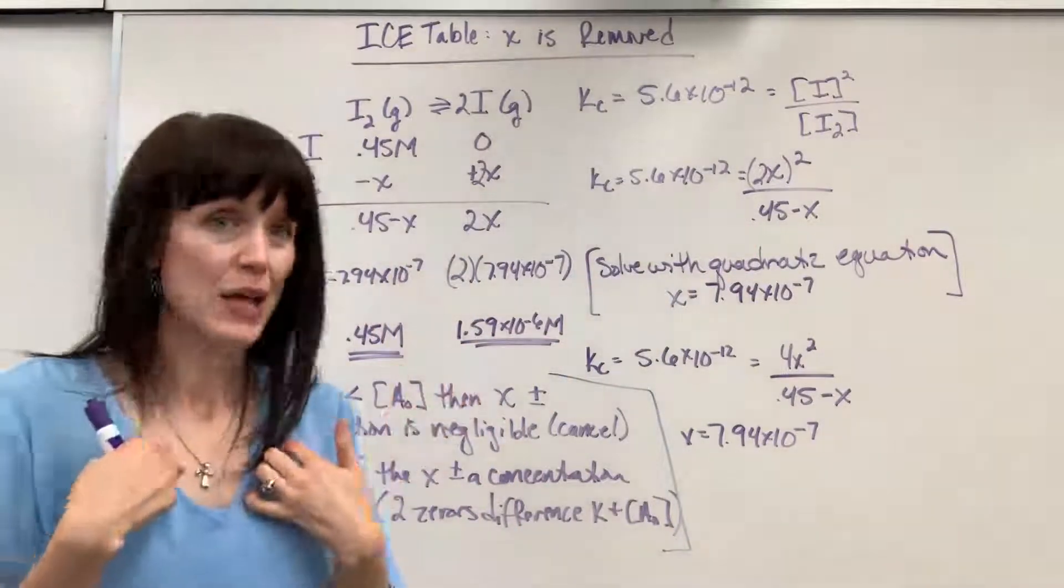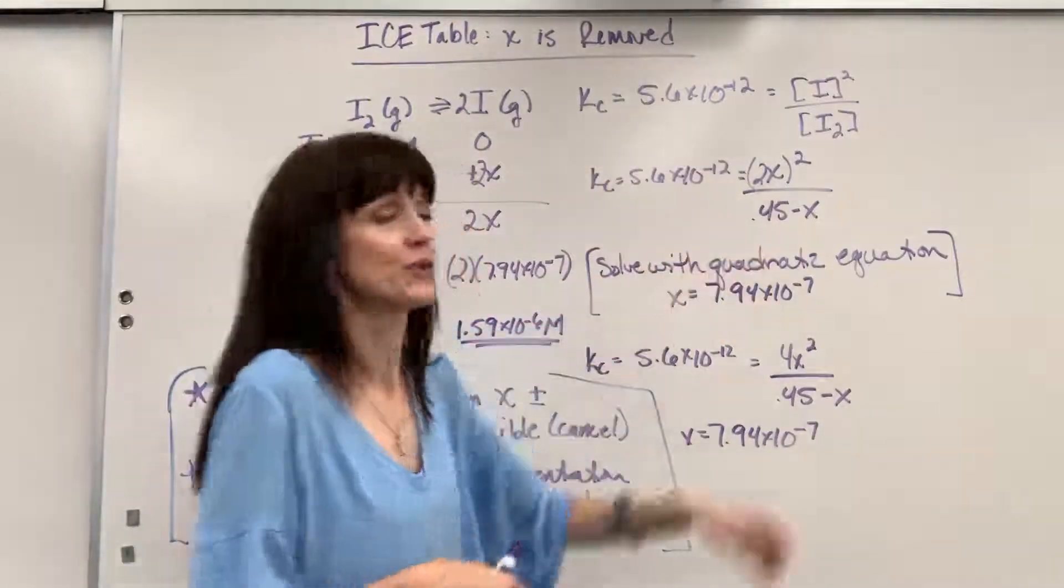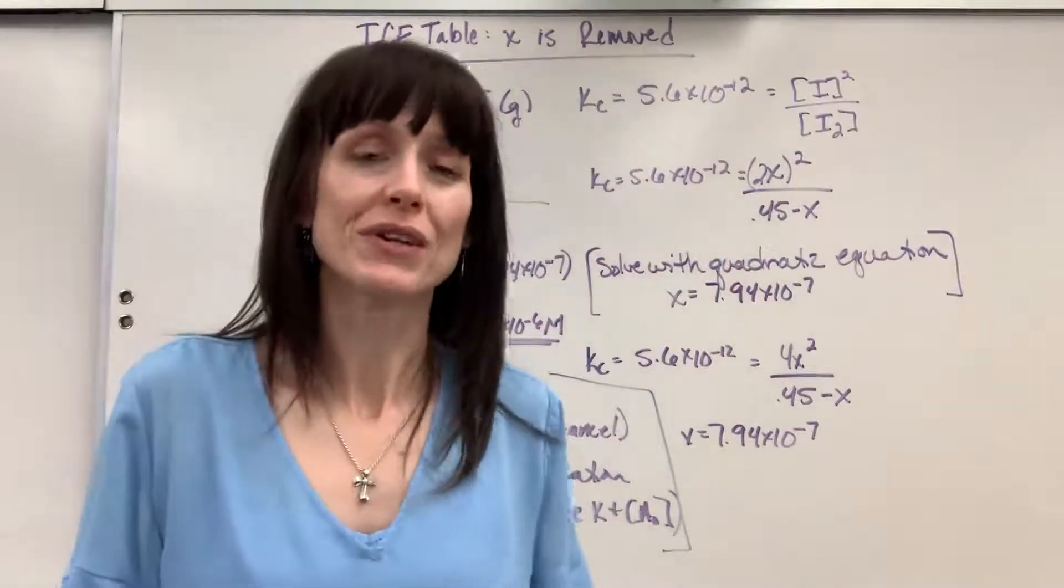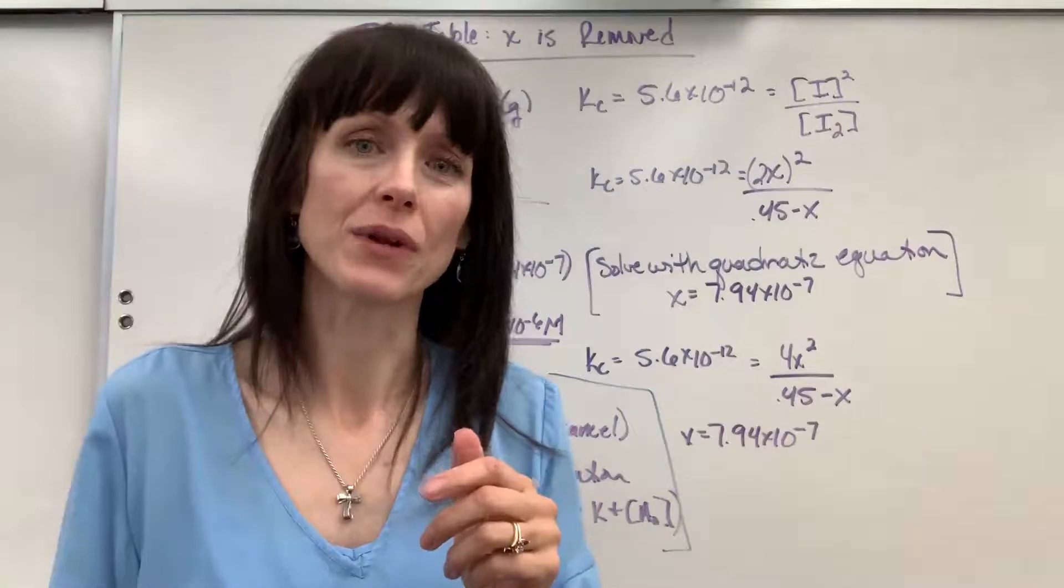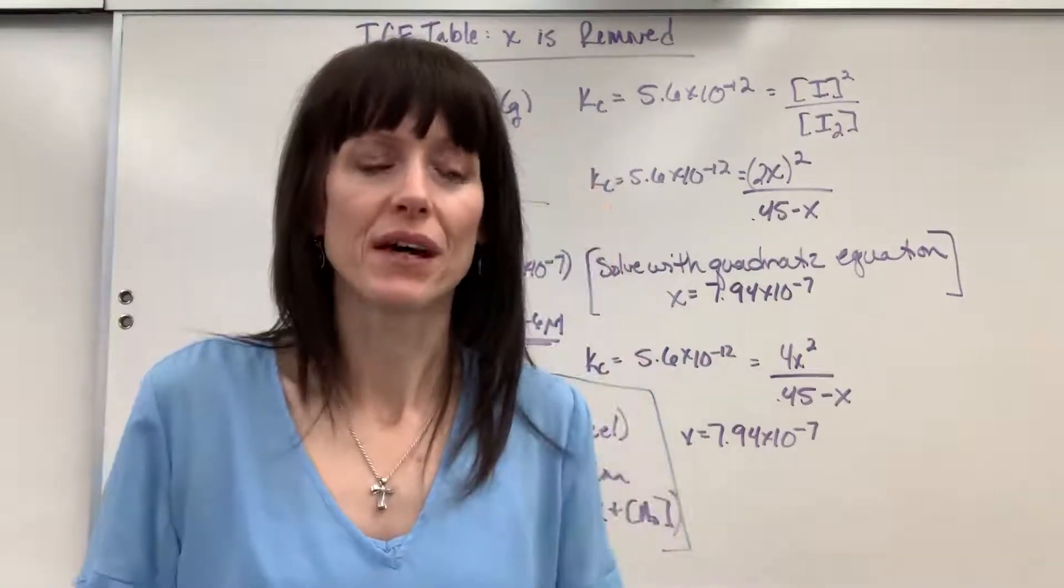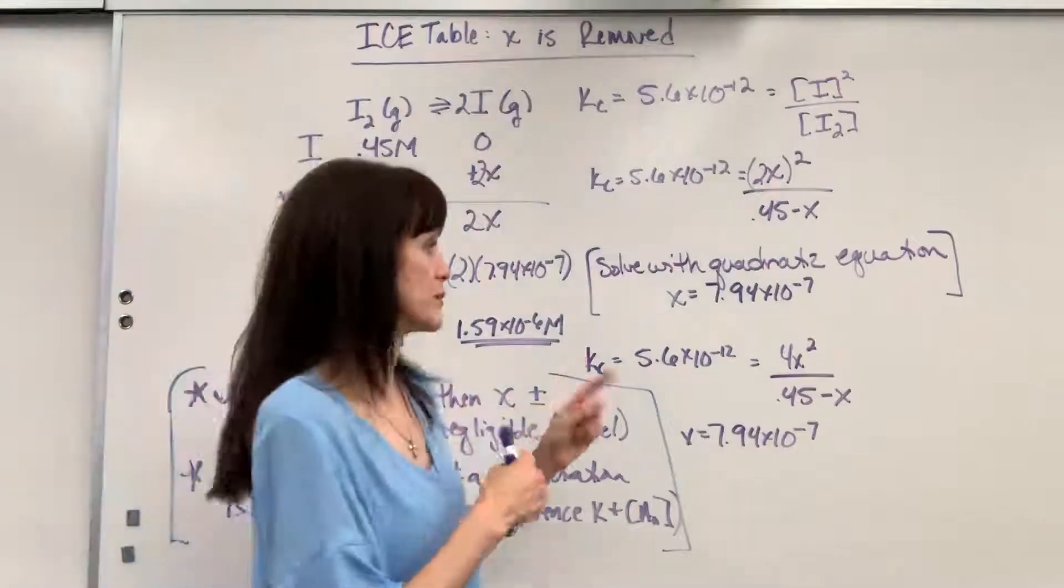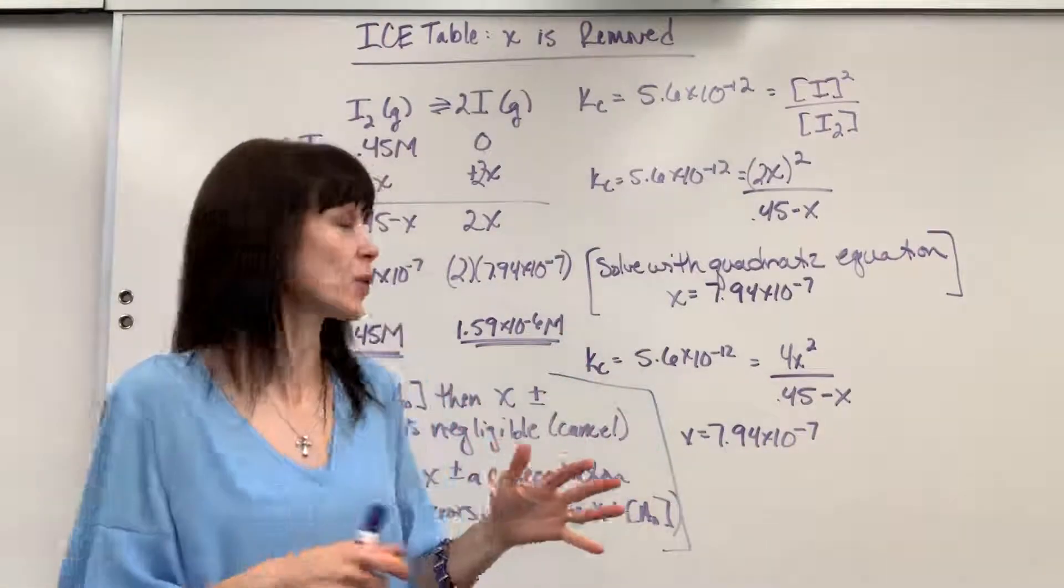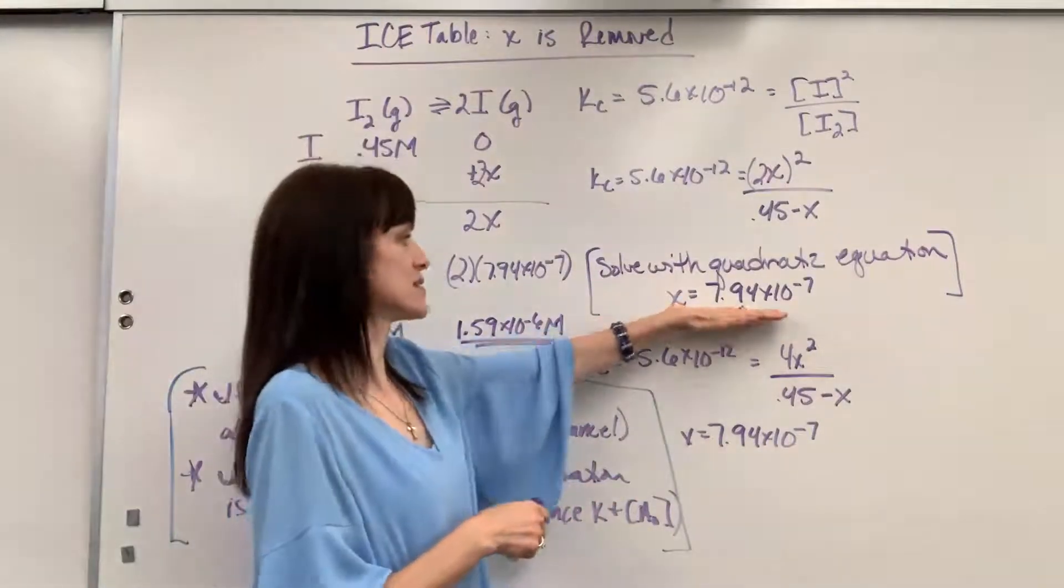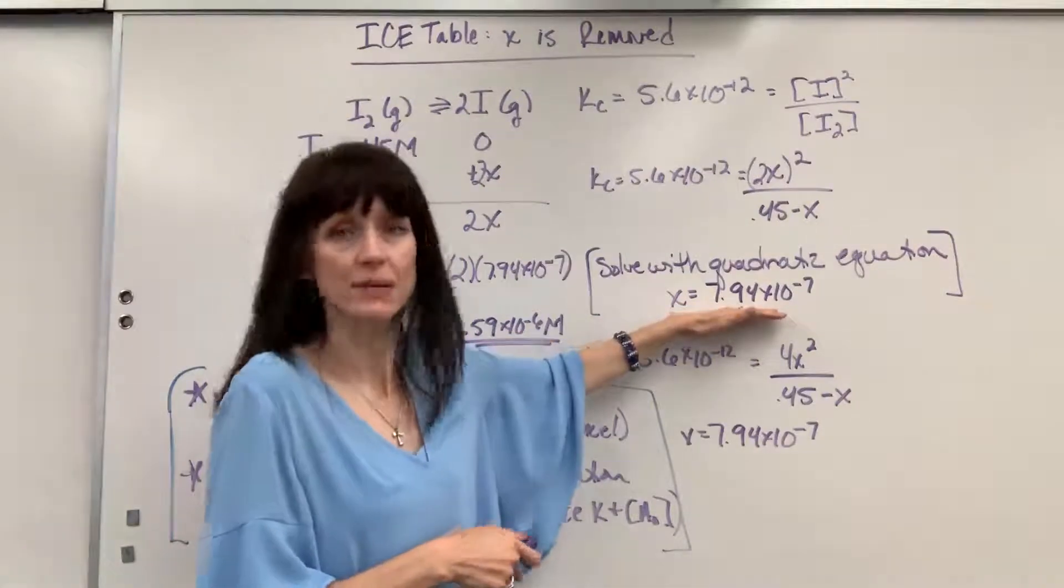Okay, I took the time and I plugged all of this into the quadratic equation. If you're wondering how to do that, look under my equilibrium playlist and you can see the video to do the quadratic equation. So I plugged into the quadratic equation, and x is 7.97 times 10 to the minus 7.